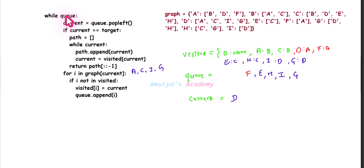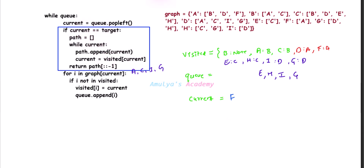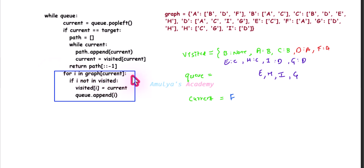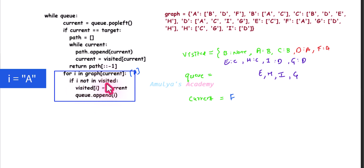Queue is not empty, so current becomes F via queue dot pop left. F is not our target. For I in graph of F — its value is A. I becomes A, but A is already present in the visited dictionary, so no need to execute the if body. No more adjacent nodes, so control comes out of the for loop.